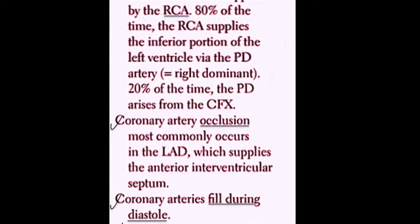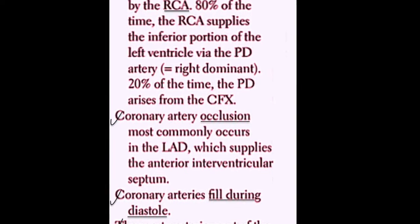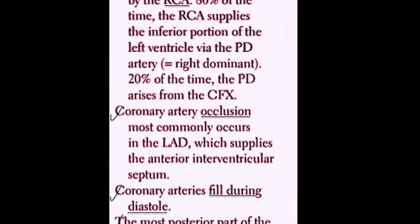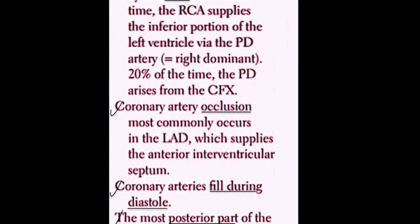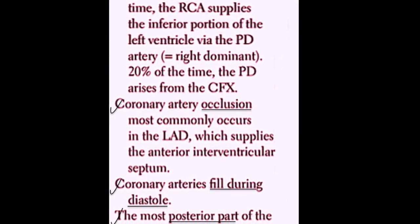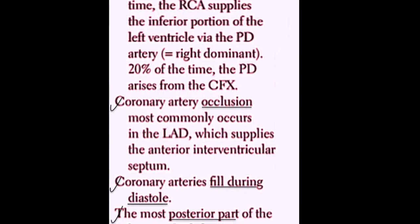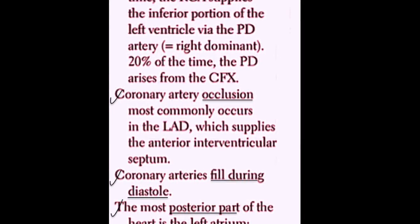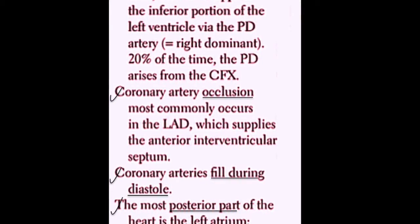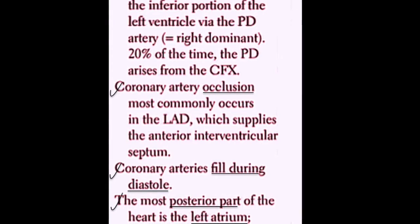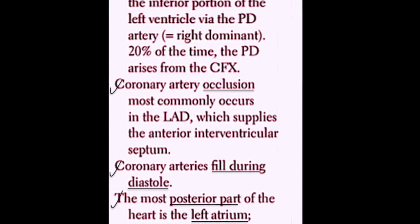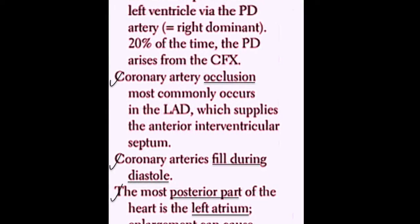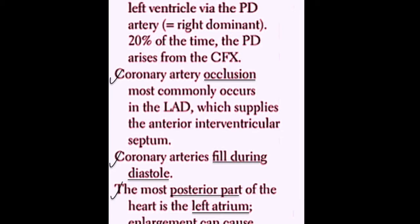Coronary artery occlusion most commonly occurs in the left anterior descending artery, which supplies the anterior interventricular septum of the heart. Remember that coronary artery occlusion results from cholesterol plaques, also known as coronary artery disease, as well as thrombosis, which is also known as acute coronary syndrome.